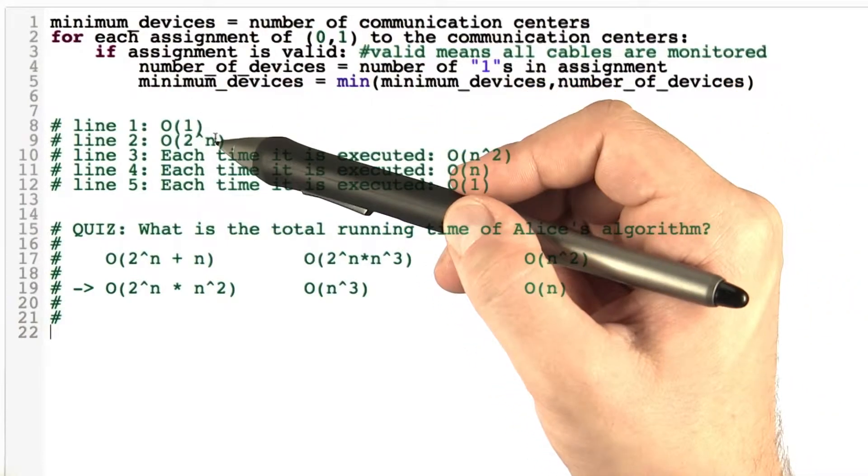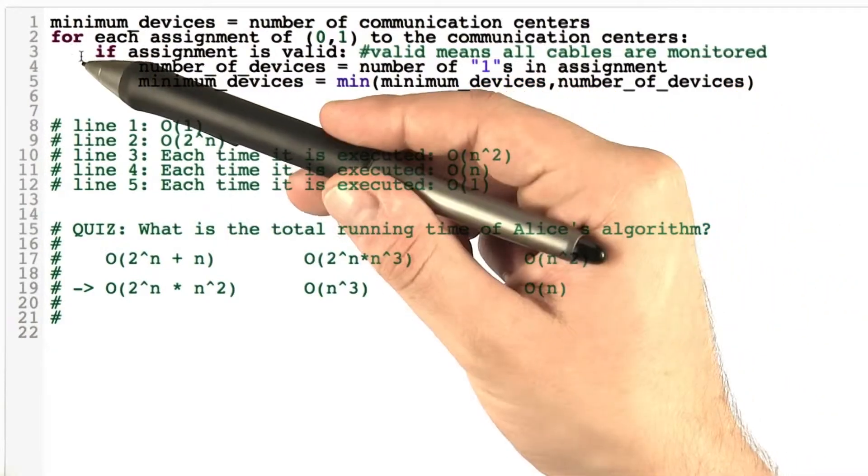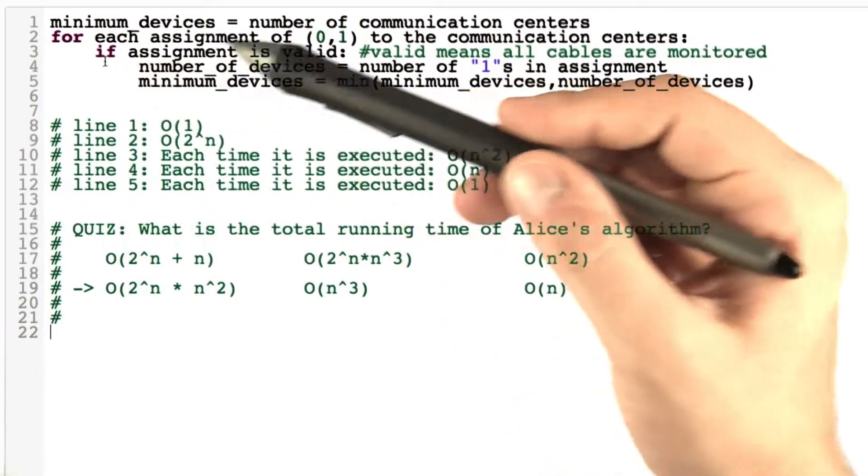So the question is, each time this inner loop here, lines 3 to 5, is executed, how much time does that take?